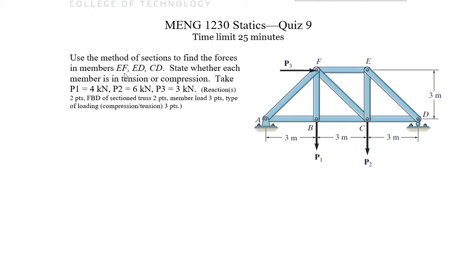So the members we're looking for are EF, ED, and CD. This is EF here, ED is going to be this one, and CD is this one here. So we're going to have to do two cuts. There's not a way that I can cut all three of these in one section. So I'm going to have to do a method of sections, possibly straight down here or down this angle, and then another one cutting ED or ED and CD.